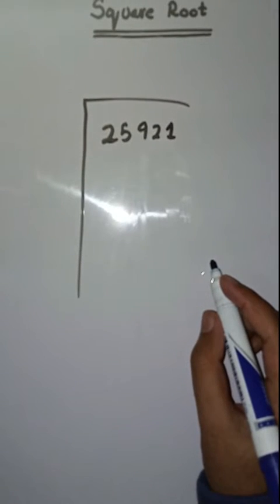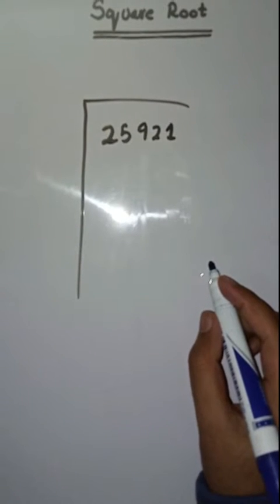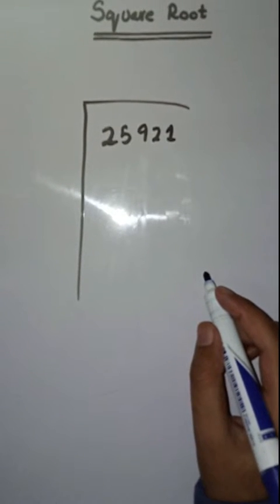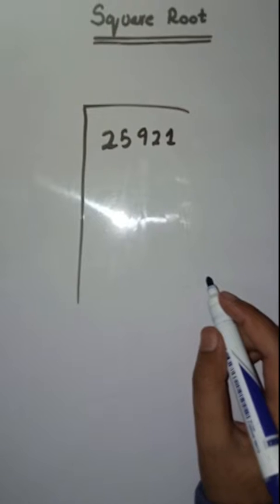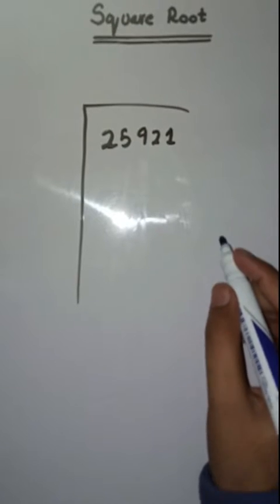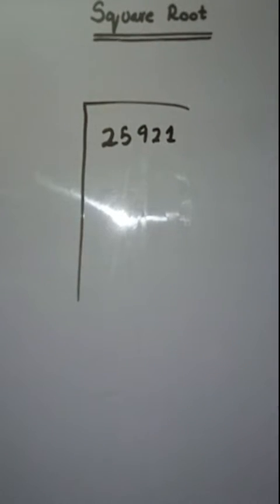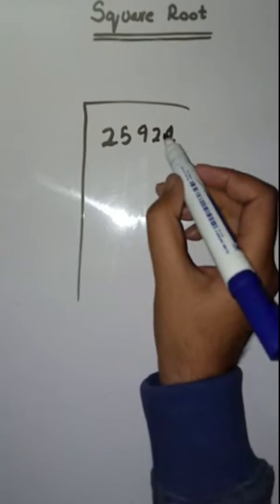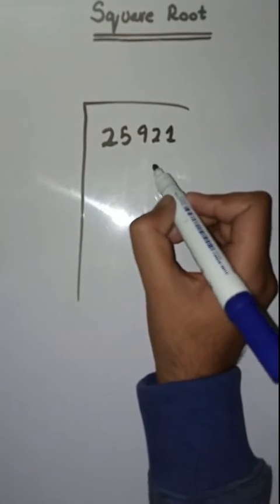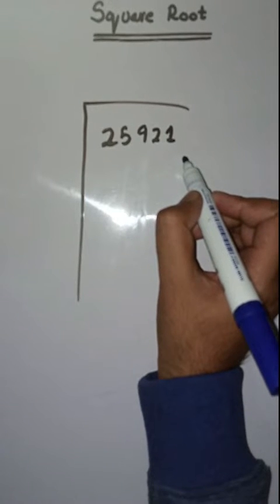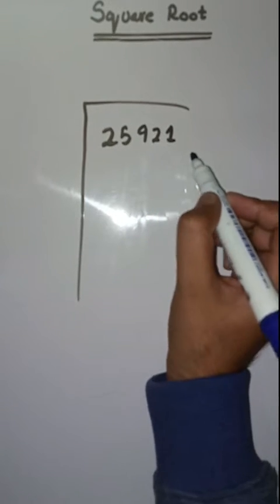Hello students, hope you all are fine. Welcome to my channel. Today we will learn how to find the square root. We have to find the square root of 25921. The first step is we have to make pairs.